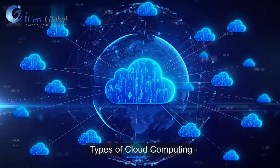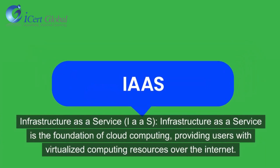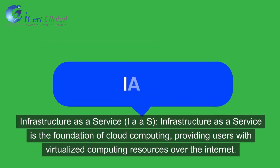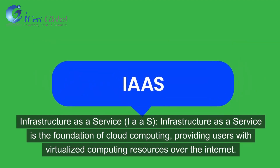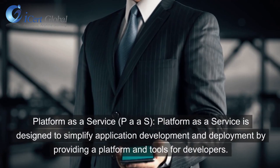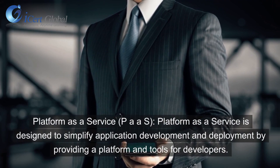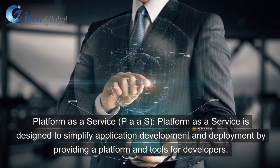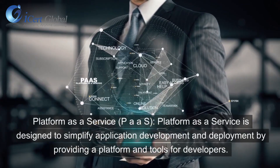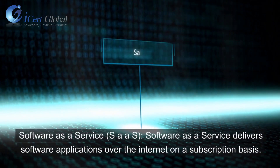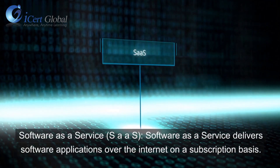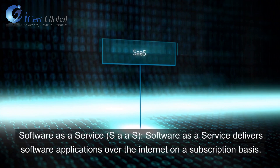Types of Cloud Computing. Infrastructure as a Service, IaaS, is the foundation of cloud computing, providing users with virtualized computing resources over the internet. Platform as a Service, PaaS, is designed to simplify application development and deployment by providing a platform and tools for developers. Software as a Service, SaaS, delivers software applications over the internet on a subscription basis.